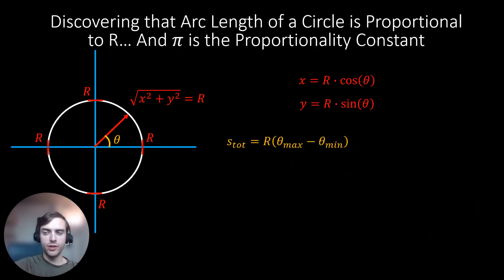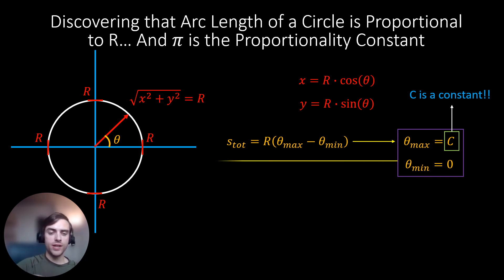So if we now set theta_max equal to a constant that represents a full cycle around the circle, and theta_min equal to 0, then we have s_tot is equal to r times c.